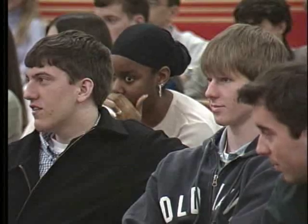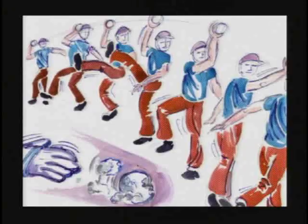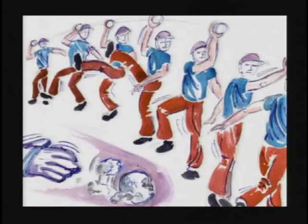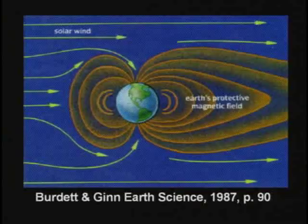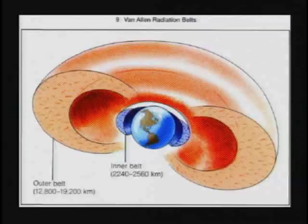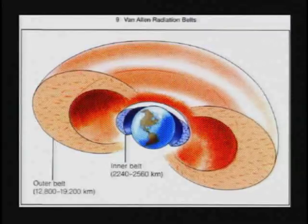A super cold ice meteor coming toward the Earth would build up speed because of the inverse square law, going faster and faster, and would break up out in space into a huge number of ice crystals. Those would shower down on the Earth as super cold snow. The Earth has a very strong magnetic field, but it's getting weaker. At the time of the flood, it was probably about 15 to 20 times stronger than it is today.